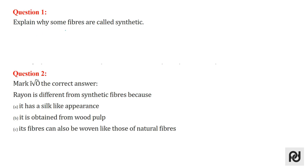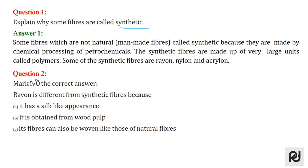Let's begin with the very first question, question 1: explain why some fibres are called synthetic. Some fibres which are not natural, also known as manmade fibres, are called synthetic because they are made by chemical processing of petrochemicals. The synthetic fibres are made up of very large units called polymers. Some of the synthetic fibres are rayon, nylon, and acrylon.